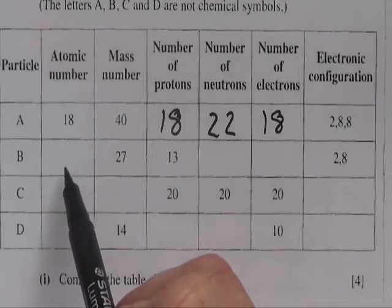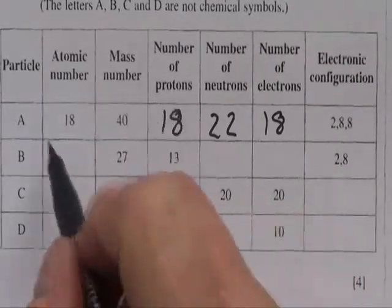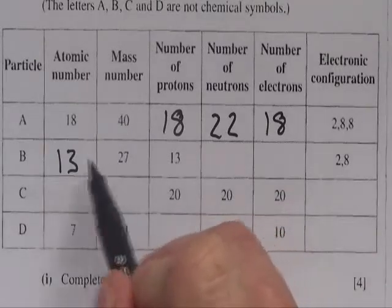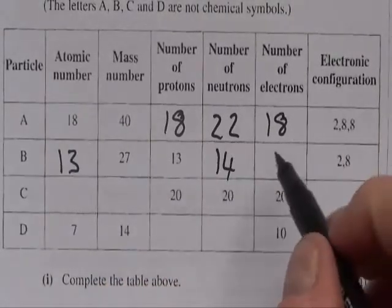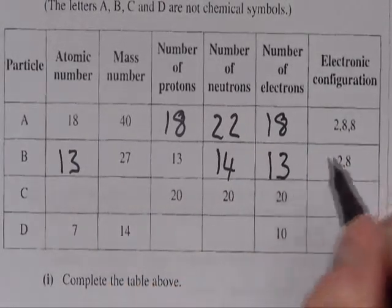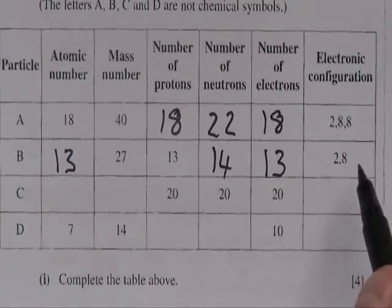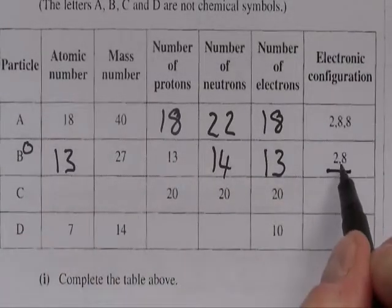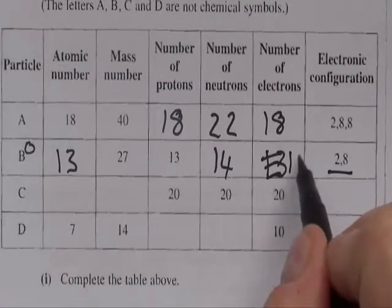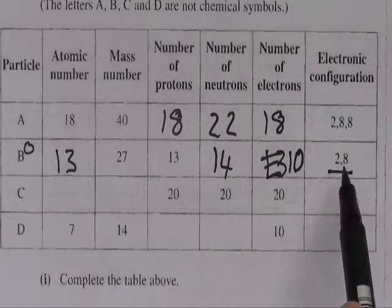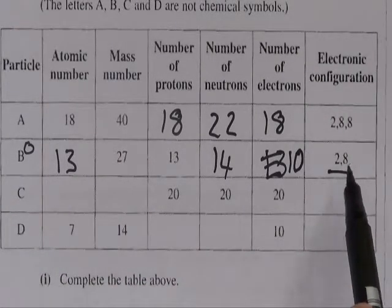For B, we don't have an atomic number, but we know the number of protons is the atomic number, so the atomic number must be 13. Neutrons are mass minus atomic — so that must be 14. There's a charge on it though — the electron configuration is given as 2,8 which means it only has ten electrons. So sometimes the charge is given as a number, and sometimes it's implied by the electron configuration.